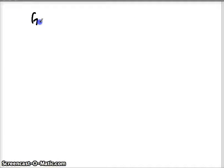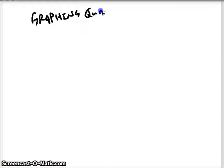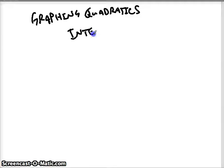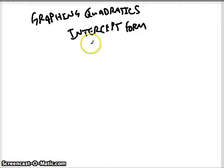In this video, we're going to be talking about graphing quadratics. In our last form we're going to see, this form is called intercept form. The reason it's called intercept form is because the form gives us the x-intercepts.